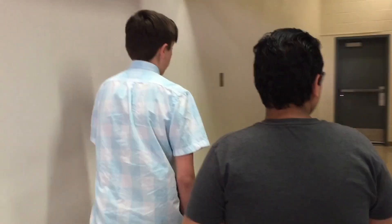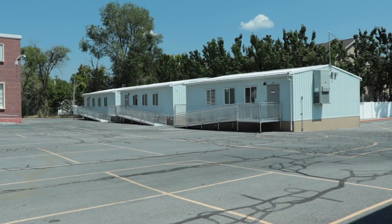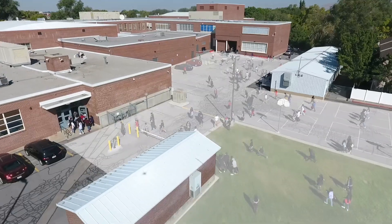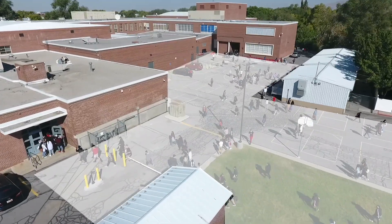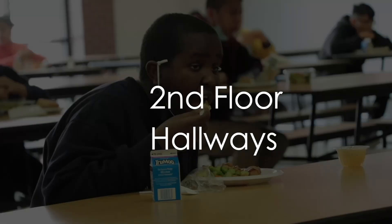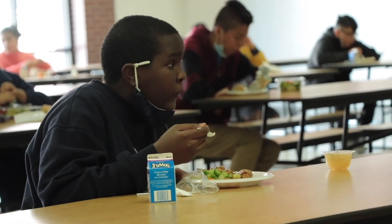You must eat your lunch in the cafeteria. Please do not take food outside. When outside, the relocatables are off limits, and you must stay in the designated areas. This also means that students at lunch are not allowed on the second floor of the school or in any of the hallways. When you're finished eating, you are welcome to go outside until lunch ends.